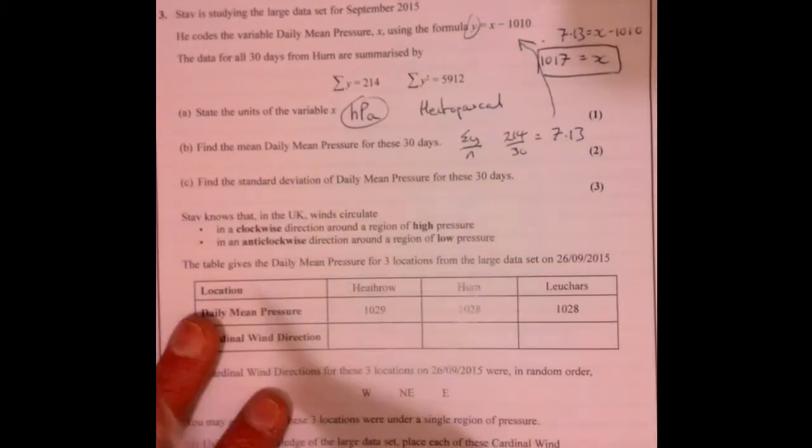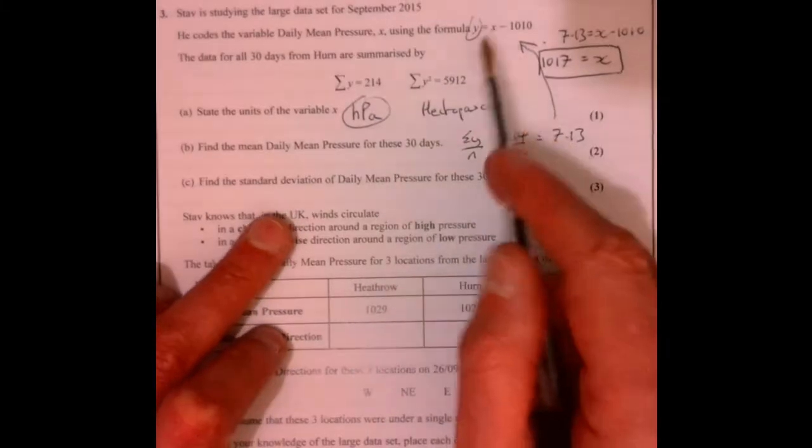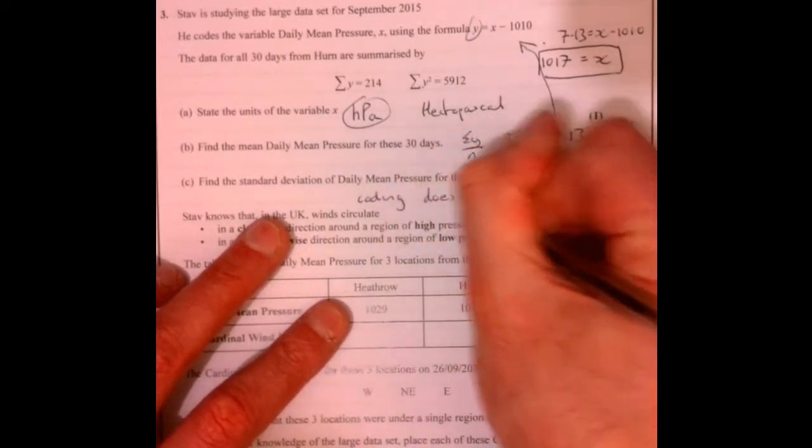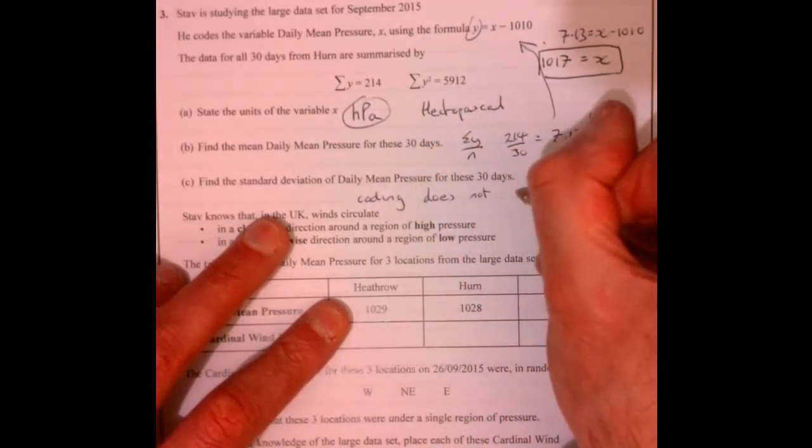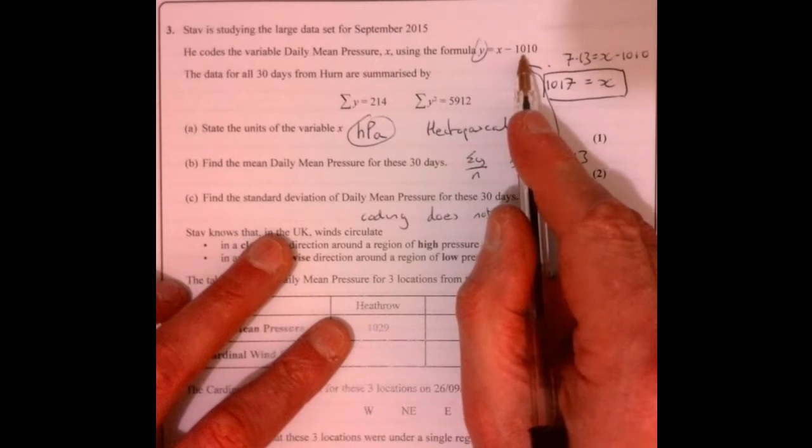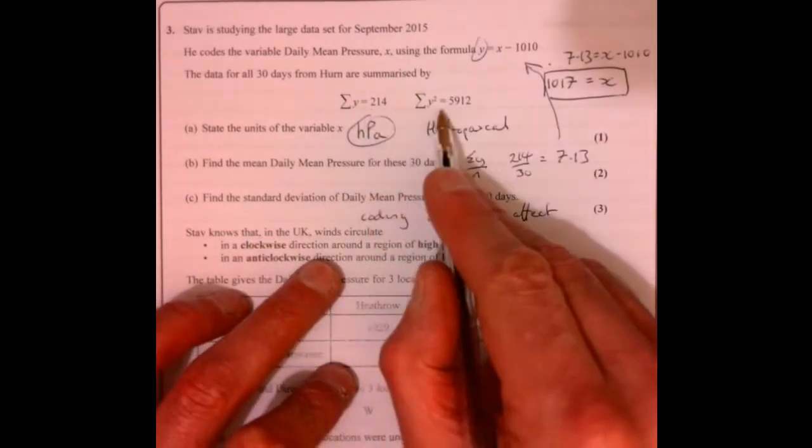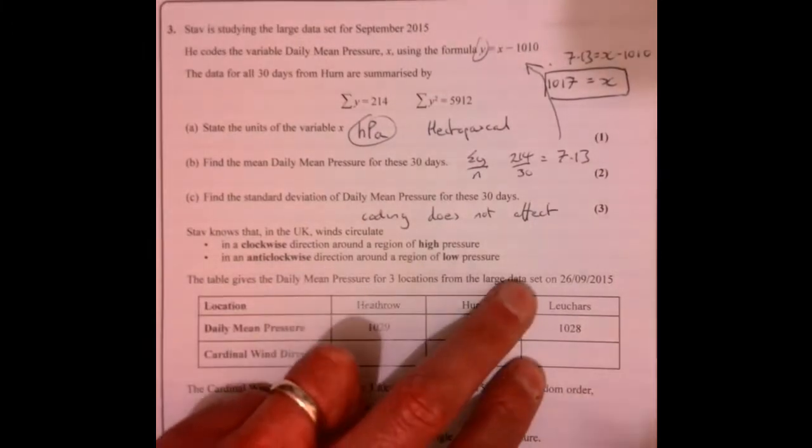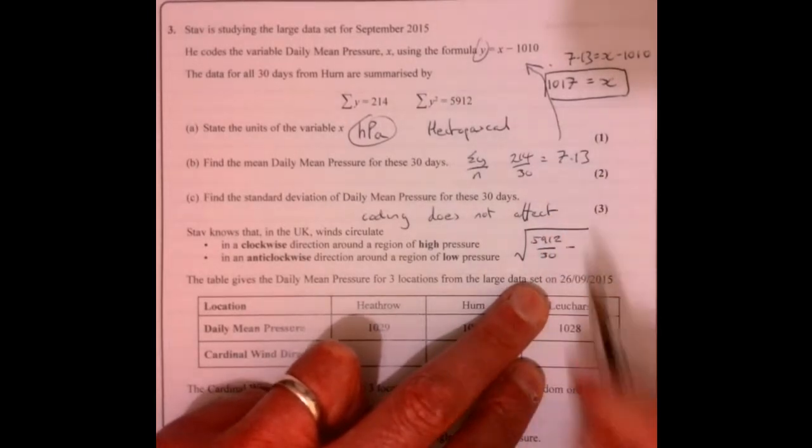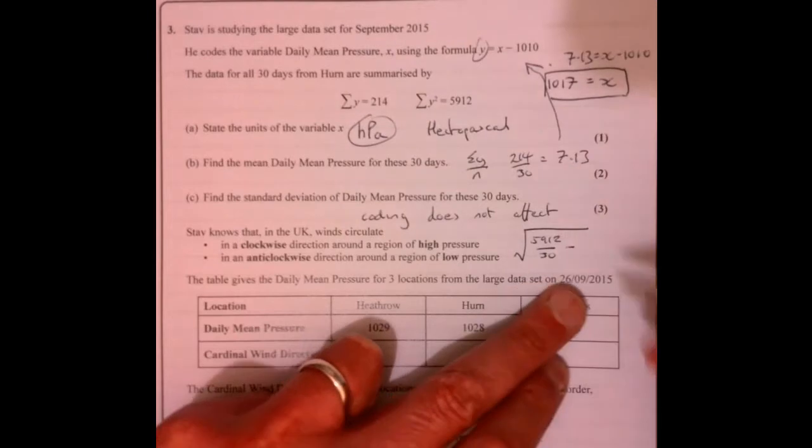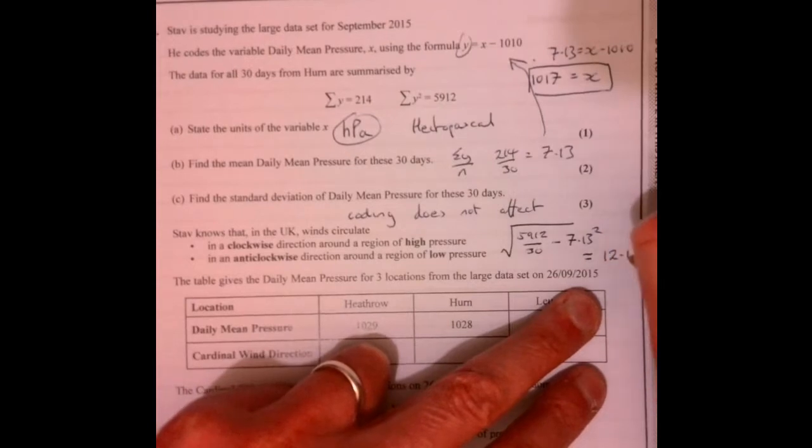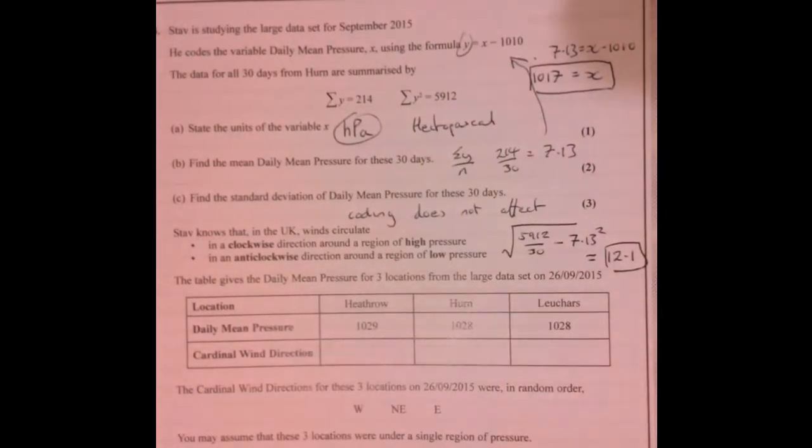Right, so for part C, standard deviation. For this part, our coding will make no difference, so coding does not affect. It's just because it's plus minus something there. All we got to do is just substitute these numbers into the formula for standard deviation. That would be 5912 over 30 and take away the mean of Y squared, and if you work that out that's going to give you around 12.1.